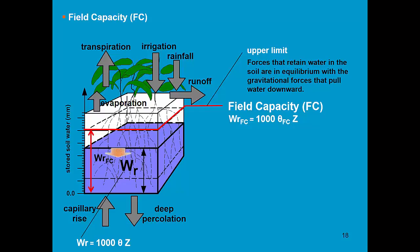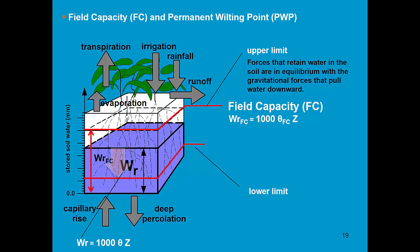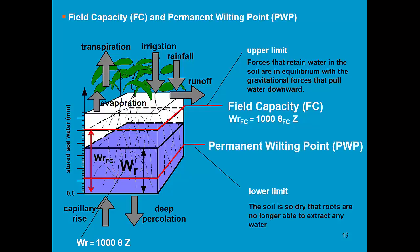When there is less and less water in the soil, the remaining water becomes strongly attached to the soil matrix. The capillary and absorption forces become stronger and stronger. At a certain moment, when we reach wilting point, the forces are so strong that the roots can no longer take up water, and consequently the crop will wilt. This lower limit is called permanent wilting point.